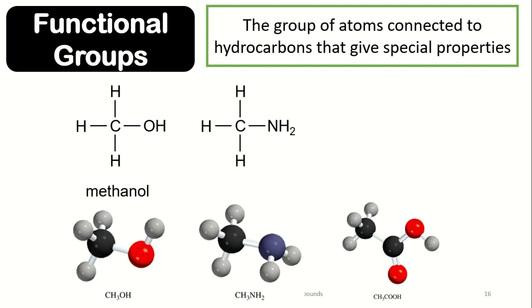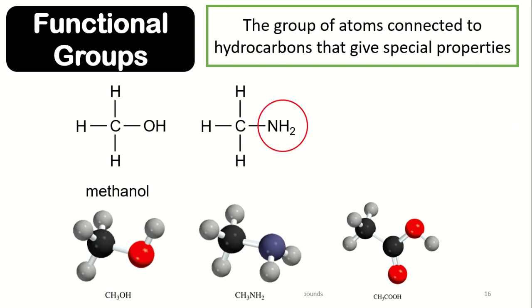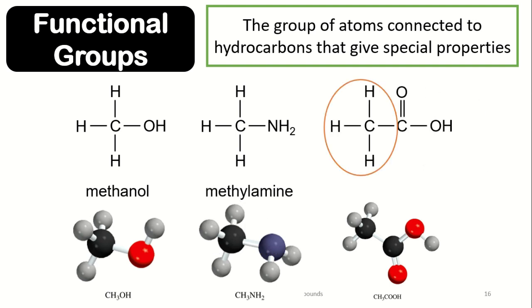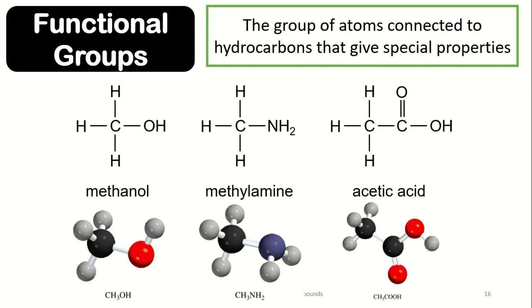Methanol, methylamine, and acetic acid are different types of compounds, but they are made up of the same number of carbon atoms. Why? Because of the functional groups. Now let us explore the different functional groups, focusing on the most common ones.